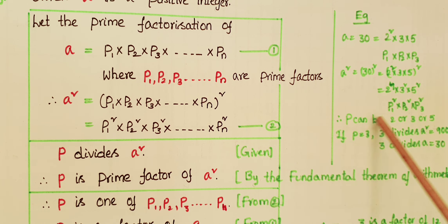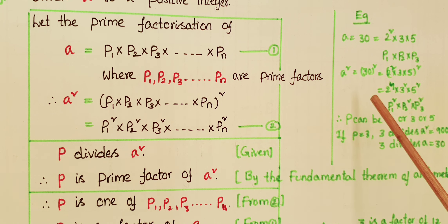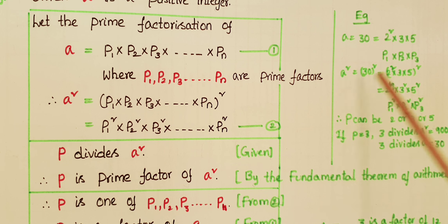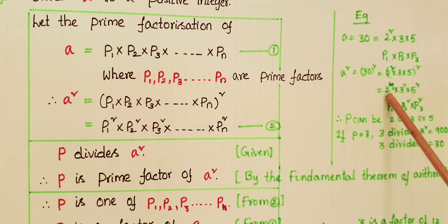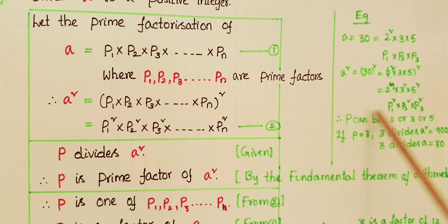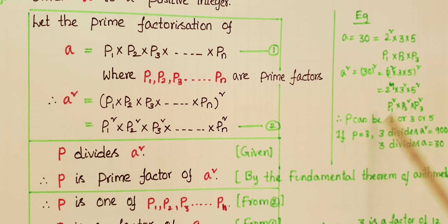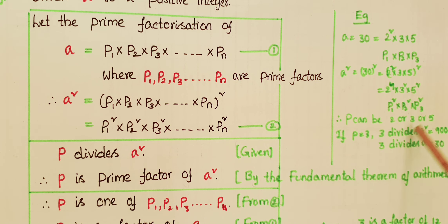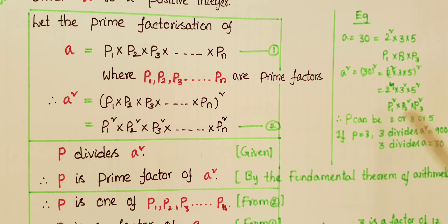The prime factors of a squared are still 2, 3, and 5 — the same as those of a. So p can be any of these: 2 divides a squared, 3 divides a squared, or 5 divides a squared. For example, if p equals 3, then 3 divides a squared, which is 900. And indeed, 3 divides a, which is 30. This confirms: if p divides a squared, then p divides a.